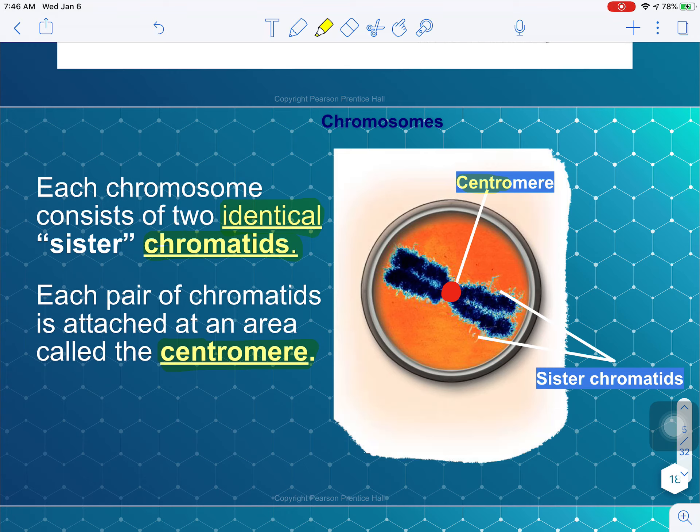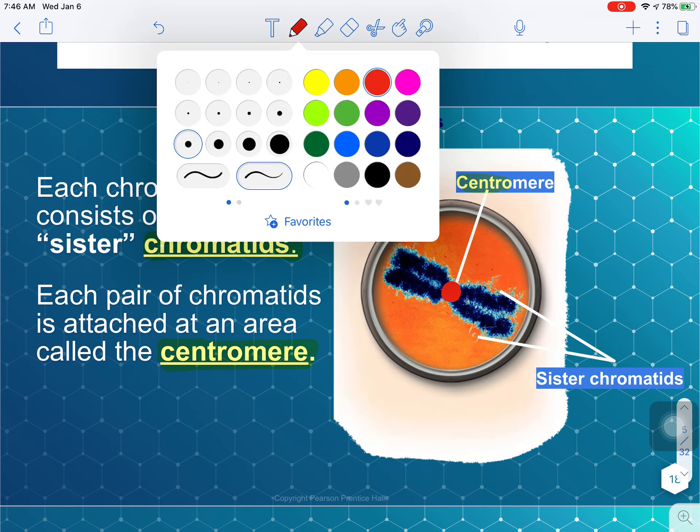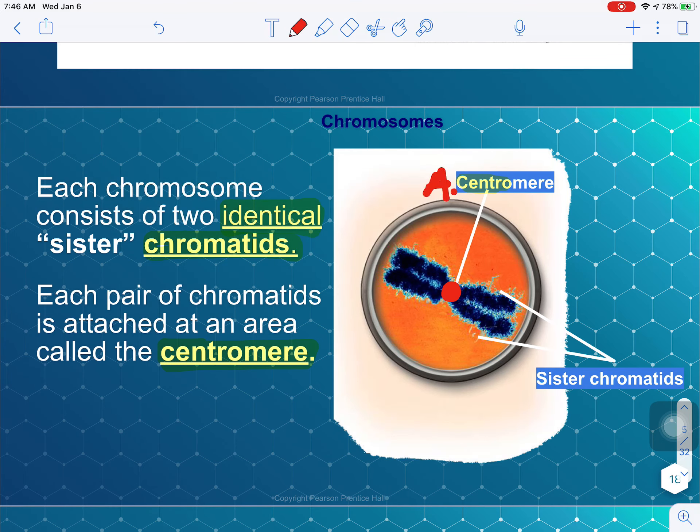So go ahead and label the picture that you have in your notes of a chromosome. So we're going to label the centromere, the centromere is A on your picture. And the sister chromatids are what we're going to label for B. So go ahead and write in those labels for your chromosome. They're going to come up again when we look at diagrams of mitosis. So it's really important that we know what each part is called.